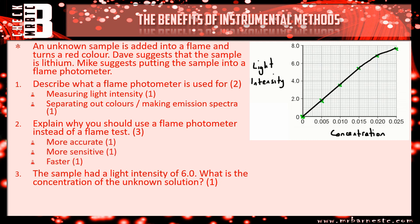And then finally, you've got a light intensity of 6.0. What is the concentration? So you read across and down from six and that's going to give you something around 0.0165. The examiner will usually give you anything between 0.015 and 0.017 there, as long as it's close and within one box.